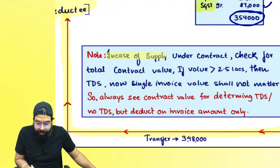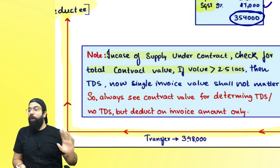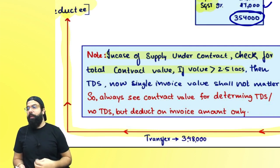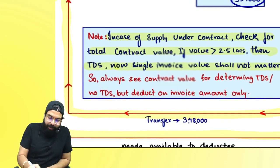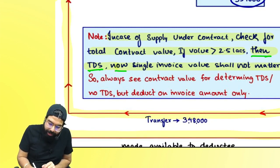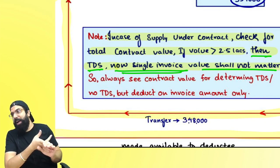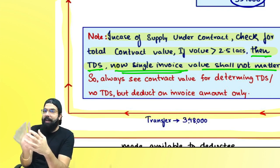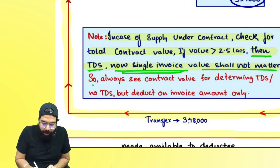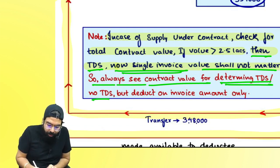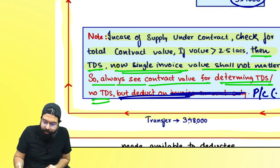In the case of supply under a contract: if the government department has a contract where the contract value is greater than ₹2.5 lakh, TDS applies on every single invoice — even if the value per invoice is less than ₹2.5 lakh. So always see the contract value to determine whether TDS applies, but always deduct on the actual payment or credit, whichever is earlier.